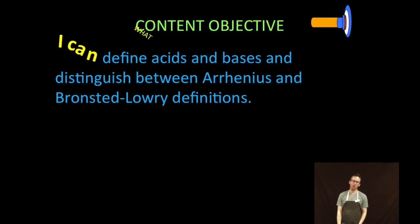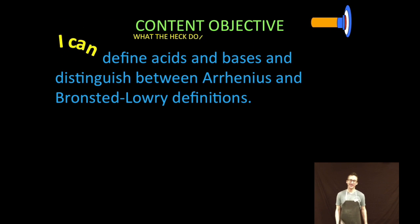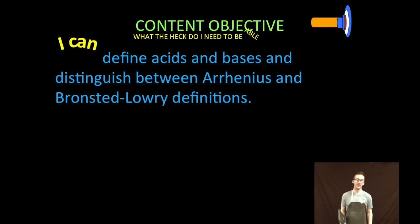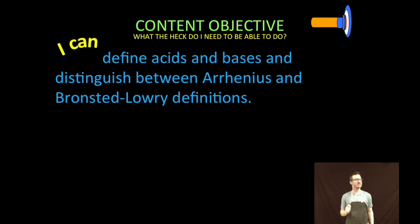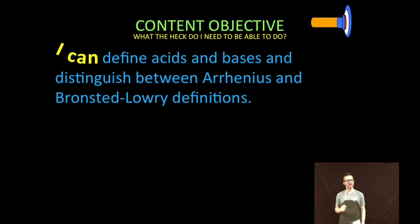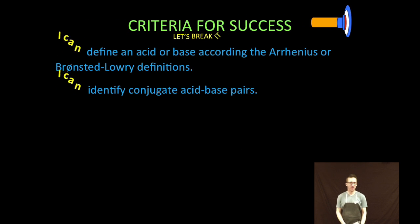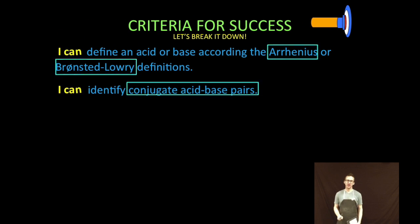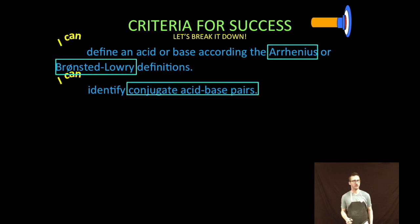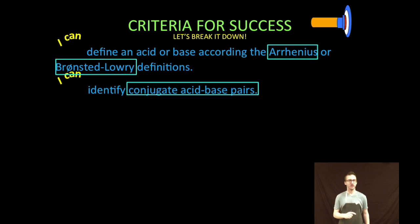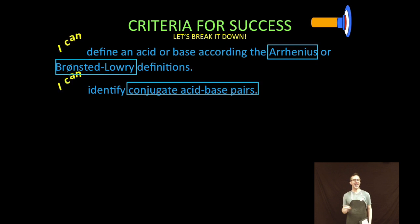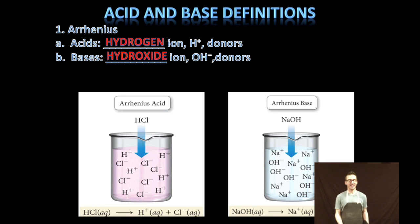Hey, what is up everybody, it is Mr. Boylan, and today we're going to define acids and bases and distinguish between Arrhenius and Bronsted-Lowry definitions. As always, let's take a quick moment and break that down. First, we'll define an acid or base according to the Arrhenius or Bronsted-Lowry definitions, and we'll identify conjugate acid-base pairs.